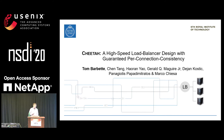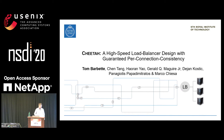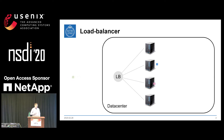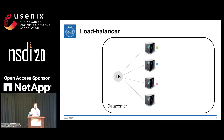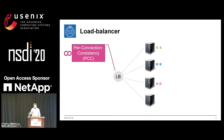Before going into the details of a high-speed load balancer, I will remind everybody what a load balancer is and what its requirements are. A load balancer is a device that dispatches packets from clients to multiple servers. It is usually found in data centers where you want multiple servers to implement a single service. There are basically four requirements. The first one is the ability for the load balancer to send packets of the same connection to the same server — that is called per-connection consistency, or PCC.